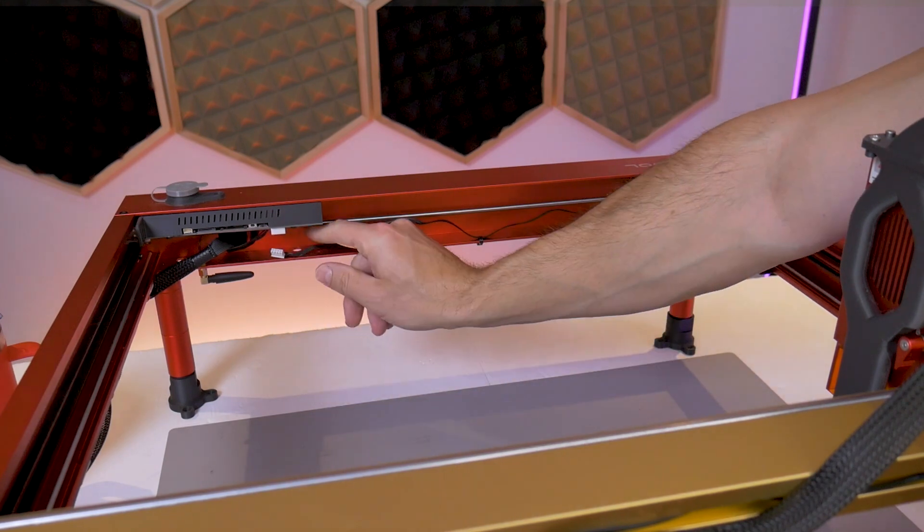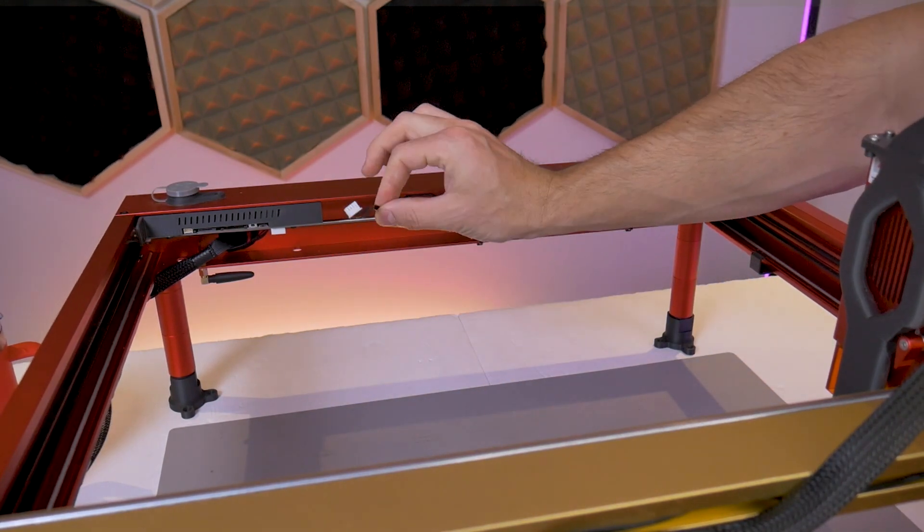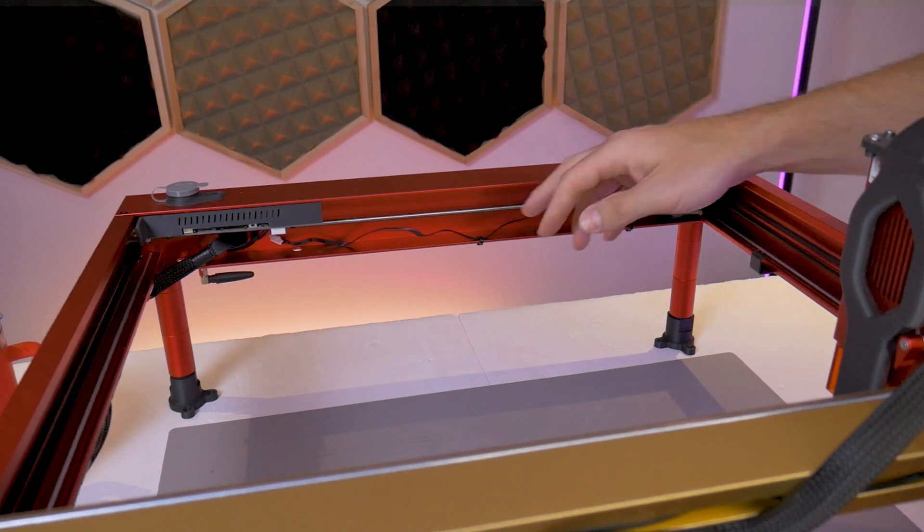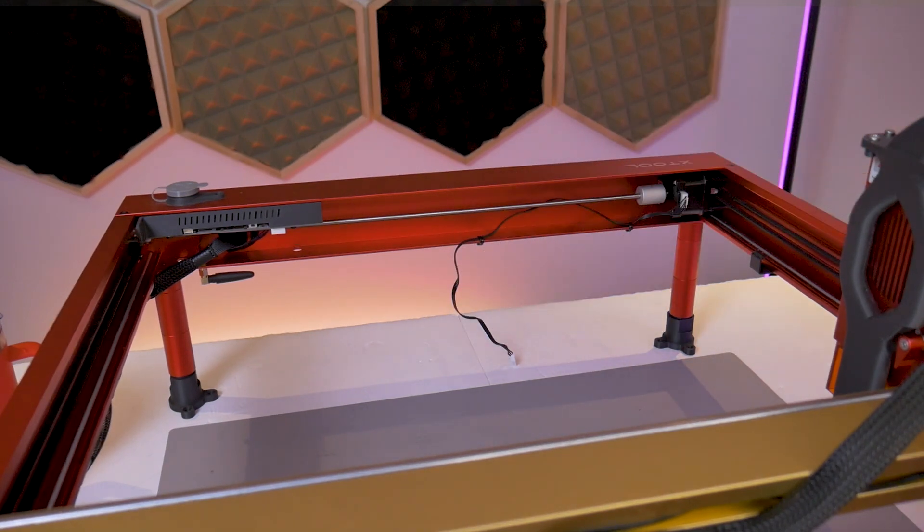When you're unplugging and plugging these cables and even when you're operating the rotary switch in the future, you should be doing this with the machine off. Do not do this with the power on.